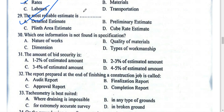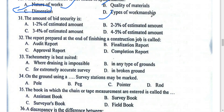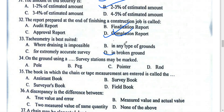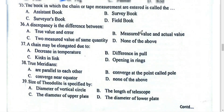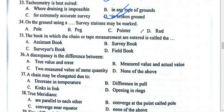Question: which information is not found in a specification? The quality of work is specified, but dimensions are not included in specifications. The bid security is 2.3% of the estimated amount. The completion report is prepared at the end of a construction job.